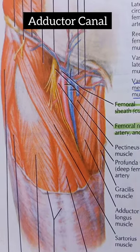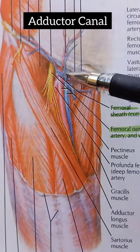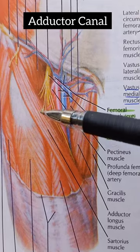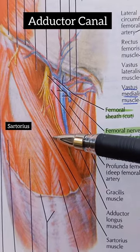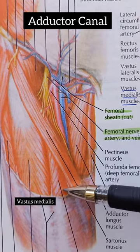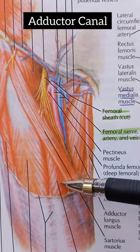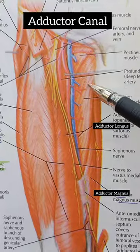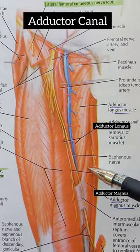Hi guys, this is a superficial dissection view of the thigh, and this is the adductor canal. The boundaries are: anteriorly, the sartorius muscle; laterally, the vastus medialis muscle; and the medial and posterior boundaries are the adductor longus muscle and adductor magnus muscle.